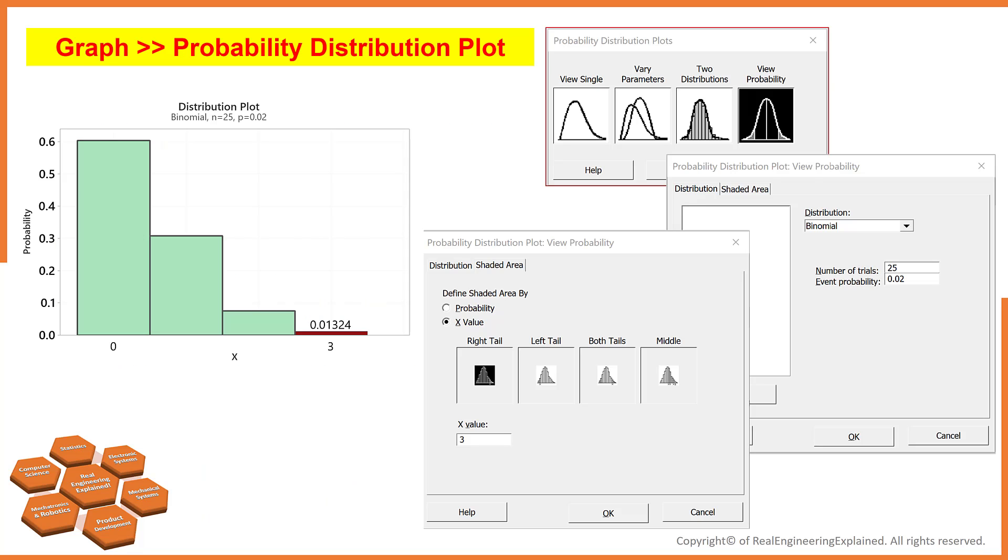Let's solve this problem in Minitab. Go to graph, select probability distribution plot, and then select view probability. From the drop-down menu, select binomial distribution. Enter 25 for number of trials and 2% for event probability. Select shaded area tab, and select x value, right tail. Enter 3 for x value.